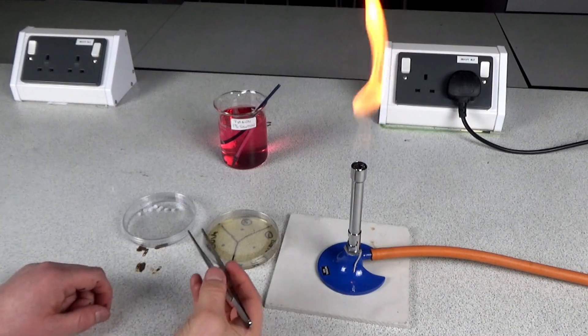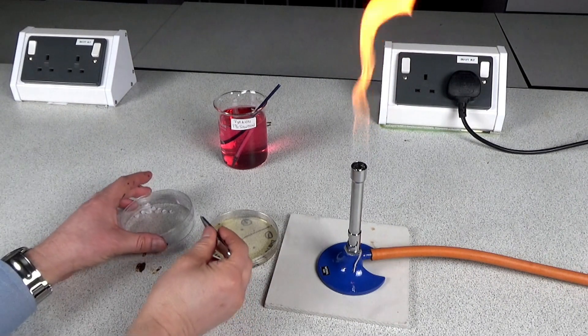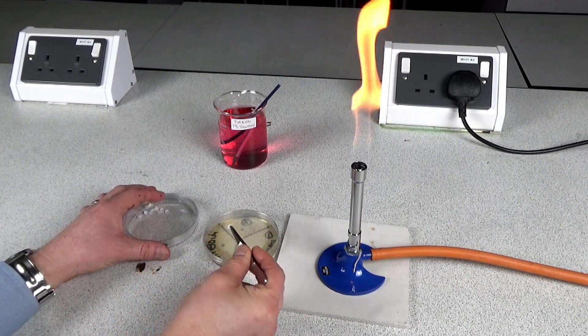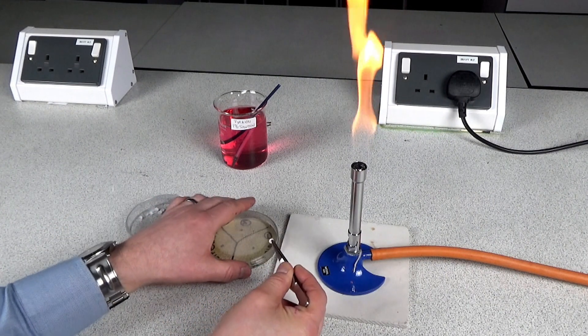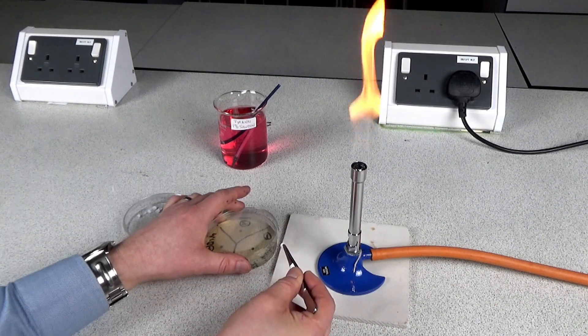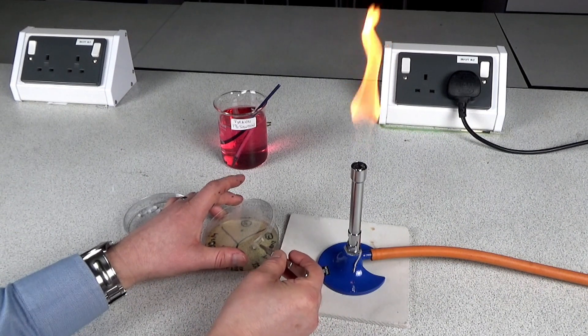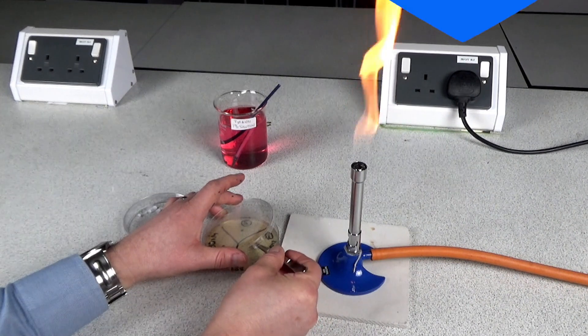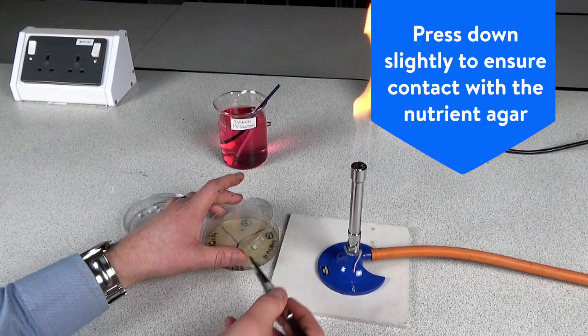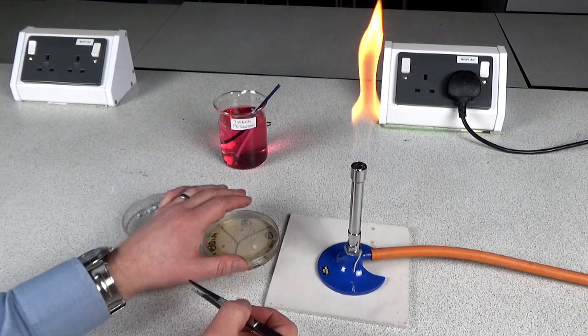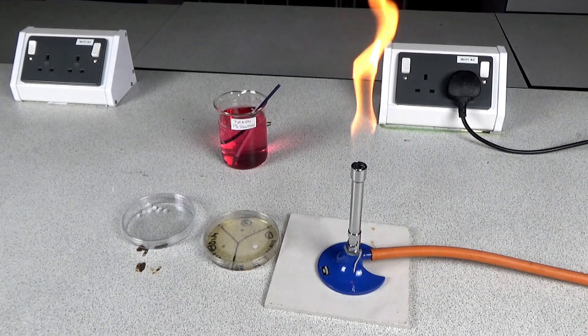Your students then use a pair of forceps to take one of the discs that's been soaked in one of the antibiotics, and this one I've got here is penicillin. They lift the lid of the petri dish slightly, place it onto one of the three areas on the dot that they've got, and they press it down slightly to ensure contact with the nutrient agar. They then replace the lid and repeat it with two other types of antibiotic.